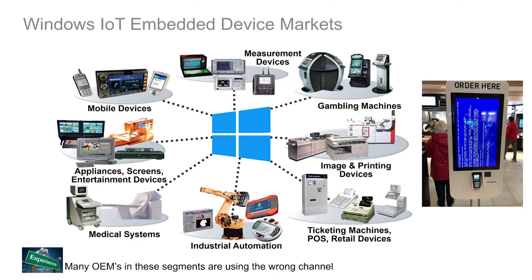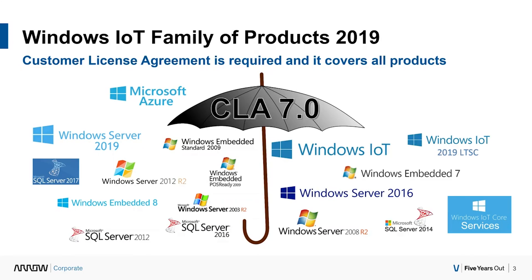Probably the biggest competitor is Windows 10 Professional. The picture on the right of the little kiosk — anytime you're going through an airport or you see this type of error message on the screen, it's usually an indication that they've used Windows 10 Pro and not the IoT product. The IoT product has specific features built into it to prevent that from ever happening, and we have a number of customization guides to help you configure the product so your device will never have that happen.